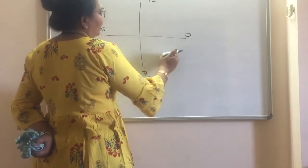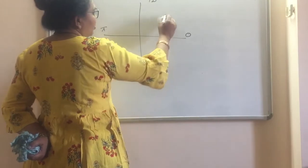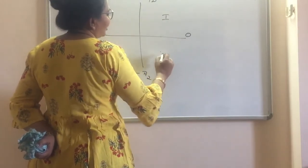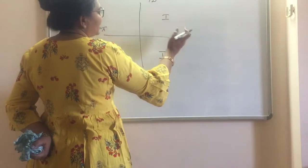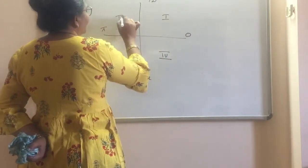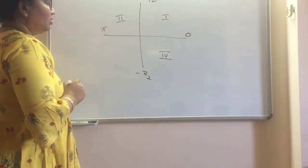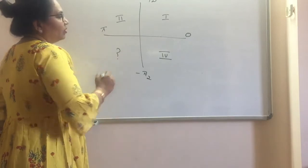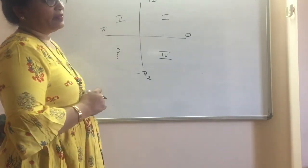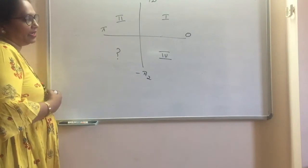So minus pi by 2 to pi by 2, we are going to consider first quadrant and fourth quadrant. In 0 to pi, we consider first quadrant and second quadrant. So third quadrant we are not going to use in this inverse trigonometric function. Different problems come; we will discuss later.